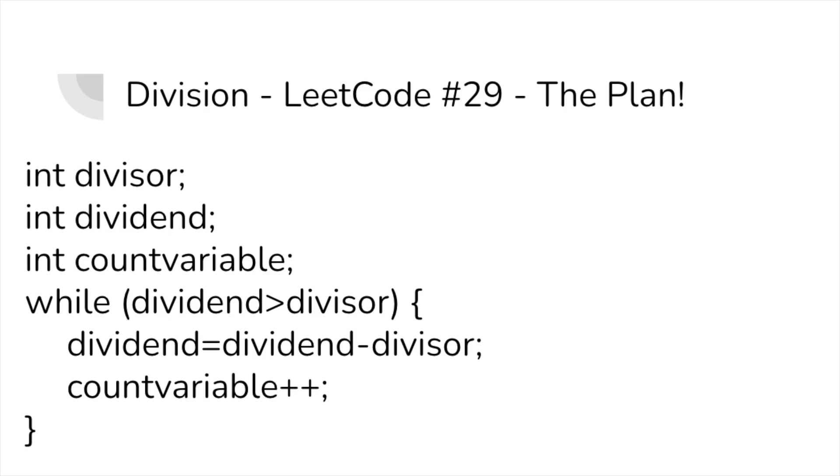So the way I want to solve this problem is by continuously subtracting the divisor from the dividend until the dividend is smaller than the divisor. This way we can find out the amount of times that our divisor can fit inside of the dividend by counting the amount of times that we subtract it. We can do this with a simple while loop which subtracts divisor from dividend until dividend is smaller than divisor, along with increasing a variable of your choice by 1 each time.